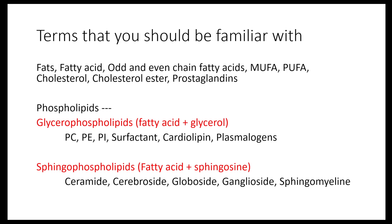Look carefully at this slide — there are a lot of words used here, and by the end of this lecture you should be able to identify and give examples for them. We should know what are fats, fatty acids, odd and even chain fatty acids, monounsaturated and polyunsaturated fatty acids, cholesterol and cholesterol esters, prostaglandins, phospholipids — both glycerophospholipids and sphingophospholipids. Glycerophospholipids include phosphatidylcholine, phosphatidylethanolamine, phosphatidylinositol, surfactin, cardiolipins, and plasmalogens. Sphingolipids include ceramides, cerebrosides, globosides, gangliosides, and sphingomyelin.